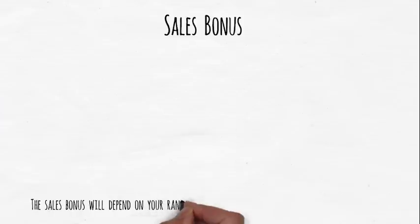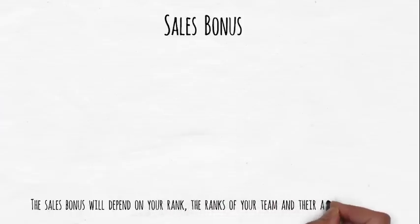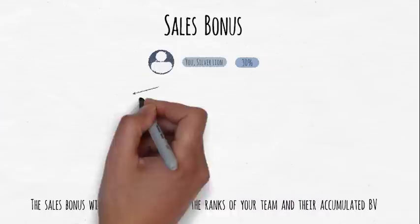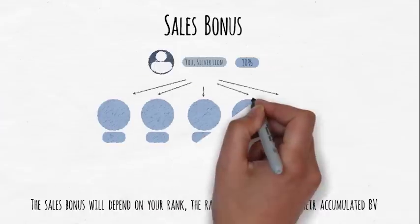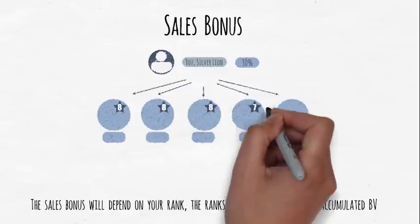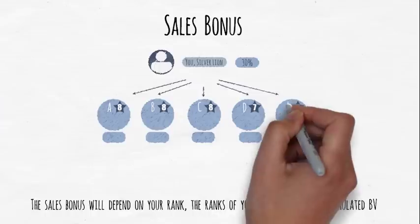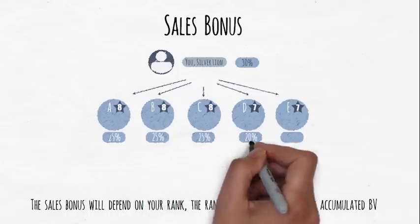Let's now take a look at the repeat sales incentives. The sales bonus will depend on your rank, the ranks of your team, and their accumulated BV. Let's use an example. If you achieve the rank of Silver Lion, your sales bonus percentage is 30%. You have 5 down lines in your team. 3 have an 8-star rank, we'll call them A, B, and C, and 2 have a 7-star rank, that's D and E. Their sales bonus percentage is also shown here.